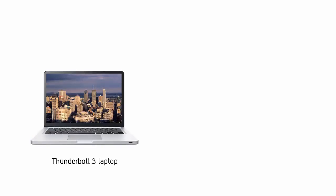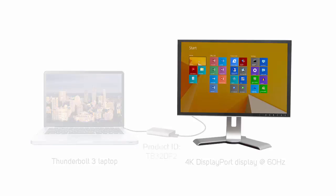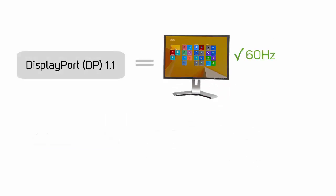If you want to use a Thunderbolt 3 adapter to connect to a 4K DisplayPort display at 60Hz, you need to configure your display to support the 60Hz refresh rate. By default, the DisplayPort settings on most displays are set to DP 1.1. DP 1.1 is capable of supporting 60Hz, but not at 4K.